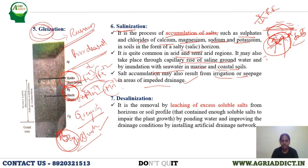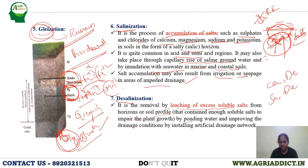Next is desalinization — the reverse of salinization. Desalinization is the leaching of excess soluble salts, that is, removal of accumulated salts from the soil profile. Excess salts are leached out usually by ponding water and improving drainage conditions by installing artificial drainage networks. Drainage is very important in the reclamation of saline soils — in desalinization, artificial drainage and ponding of water play important roles.